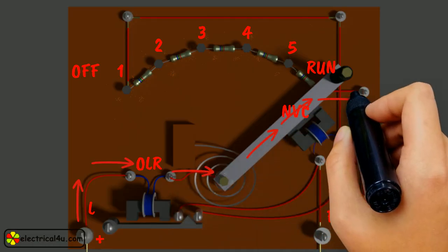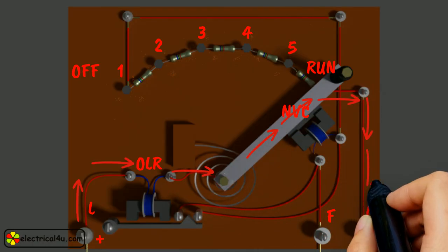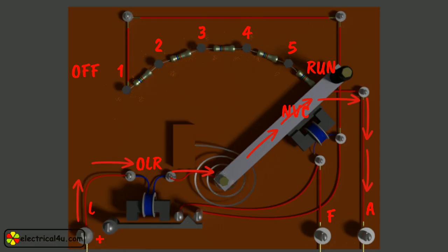Finally, when the starter handle is in run position, the entire starting resistance is eliminated and the motor runs with normal speed. This is because back EMF is developed consequently with speed to counter the supply voltage and reduce the armature current.